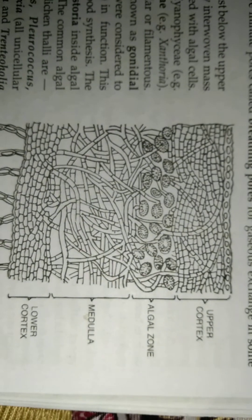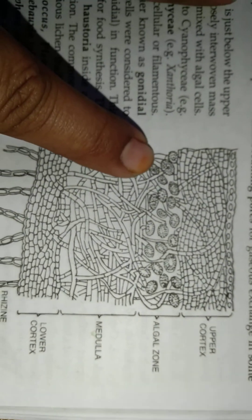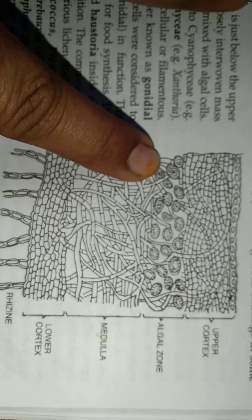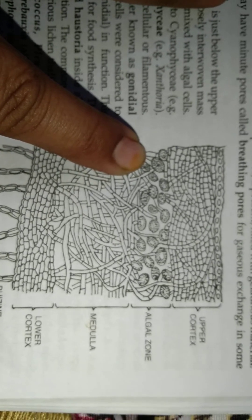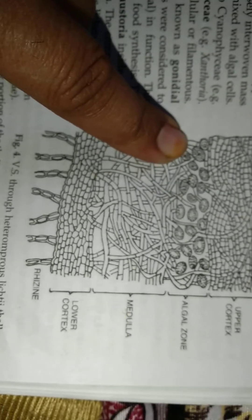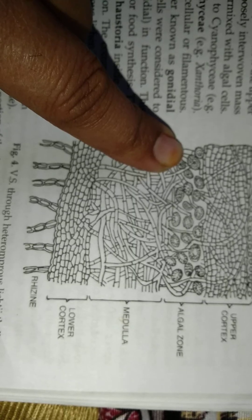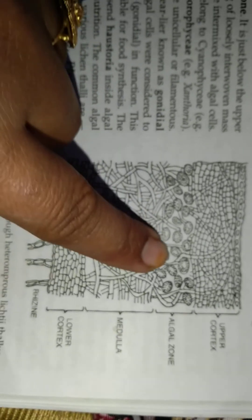This is the thallus. Algal cells form a definite layer or algal layer within the thallus. Most of the lichen belong to this category. They exhibit the stratified structure and it is also called heteromerous thallus. This is the special zone.